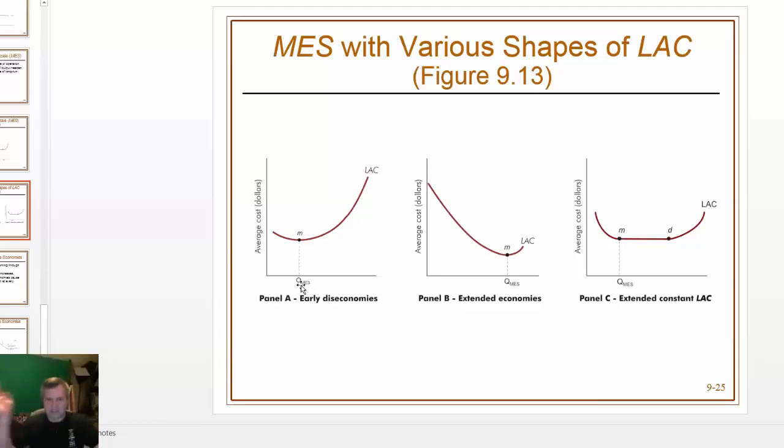So in the barbershop industry, there's tons of barbershops throughout the country, and they probably make several billions of dollars in sales from haircuts and stuff. But the average firm size is relatively small, probably because their long run average cost curve looks something like this.